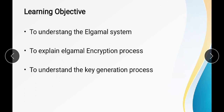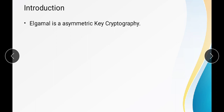ElGamal is an asymmetric key cryptography technique, meaning it uses two keys — one key for the encryption and another for the decryption. It uses the public key for encryption and the private key for decryption.